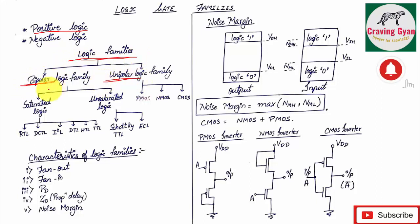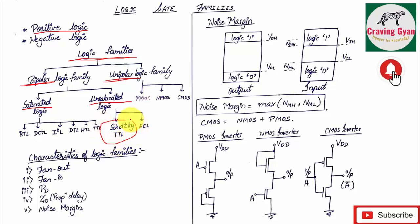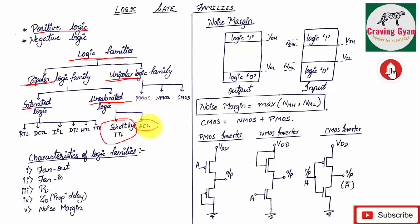Logic families are broadly classified into bipolar logic families and unipolar logic families. In bipolar logic families we have saturated logic and unsaturated logic. Under unsaturated logic, the classifications are Schottky as well as emitter coupled logic (ECL). In Schottky, it is a metal-semiconductor junction so the transistor will never get into saturation, hence it is unsaturated.